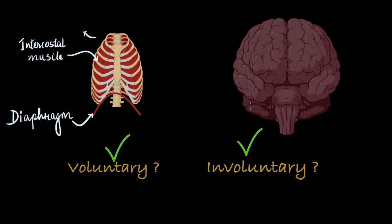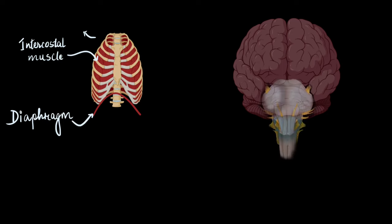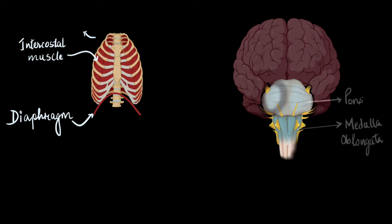The answer is that breathing is both voluntary and involuntary. But in this video we will limit our discussion to only the involuntary regulation of breathing, because that is what the syllabus requires. So let's begin the involuntary control of breathing. As you can see on your screen, the highlighted lower part of the brain — which is called the pons and medulla oblongata — contains special groups of neurons that control the muscles that help you breathe.